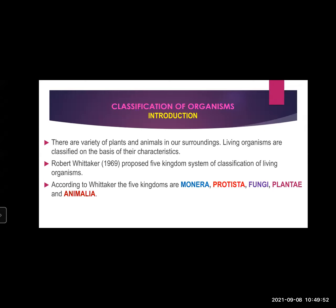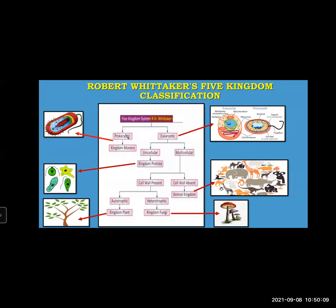On the basis of characteristics, he classified different organisms into these five kingdoms: Monera, Protista, Fungi, Plantae, and Animalia. This is how Robert Whittaker's five kingdom classification looks. Robert Whittaker classified living organisms into prokaryotic and eukaryotic. We have already seen the difference between prokaryotic and eukaryotic. In prokaryotic, he included the kingdom Monera. Then in eukaryotic, it was further classified into unicellular and multicellular depending upon the cells, and in unicellular he included the kingdom Protista.